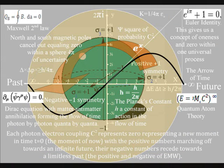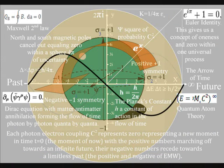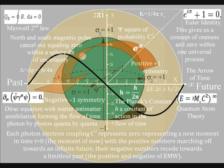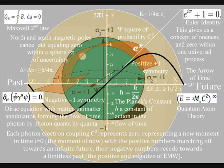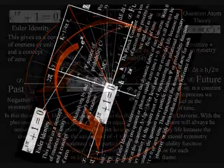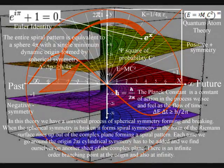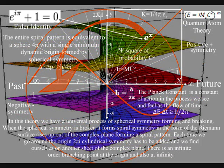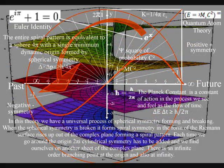In the top right-hand corner of the diagram, we have Euler's identity — the most beautiful equation ever to be discovered by man. But this beautiful equation has no meaning or purpose in modern physics. In this theory, however, Euler's identity is interwoven into the dynamic fabric of our universe, with the plus one representing one quanta or photon equaling zero time, t equals zero, the moment of now. When the spherical symmetry is broken, it forms spiral symmetry in the form of the Riemann surface, which rises up out of a complex plane forming a spiral pattern. Euler's identity is at the heart of this process: the only number you could add to one to get zero is minus one, and this forms the rotation that breaks the spherical symmetry.